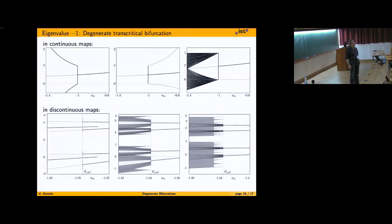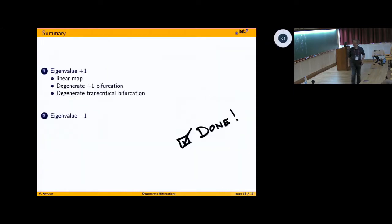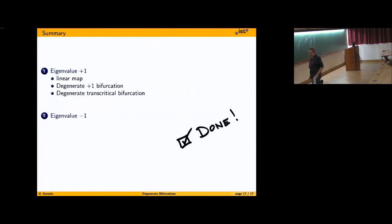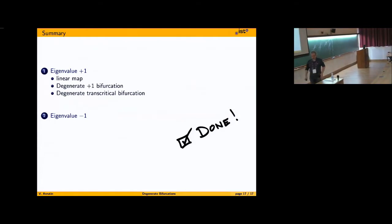Any questions, comments, suggestions? Then I would say we are done with the degenerate bifurcations. We can start our tutorial.